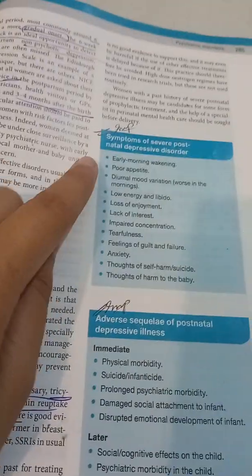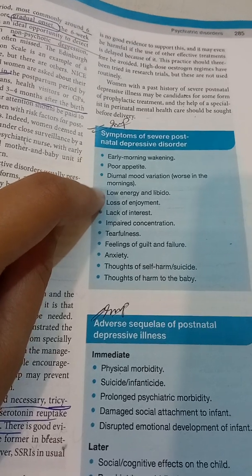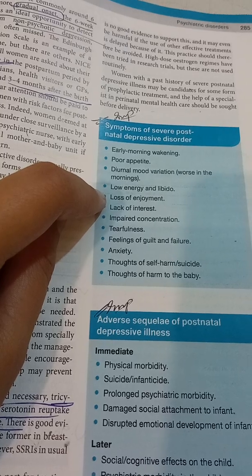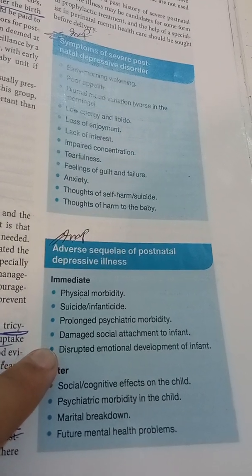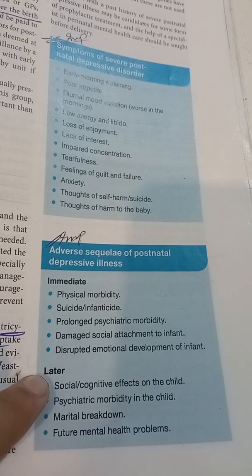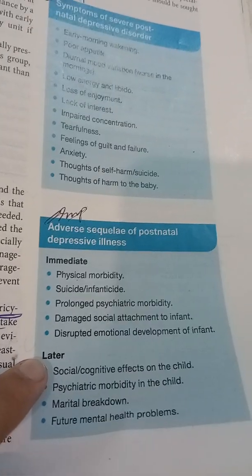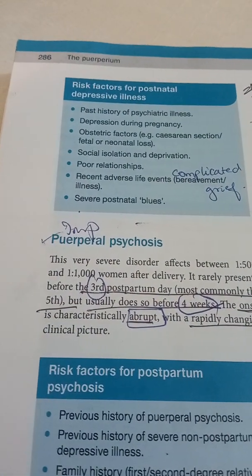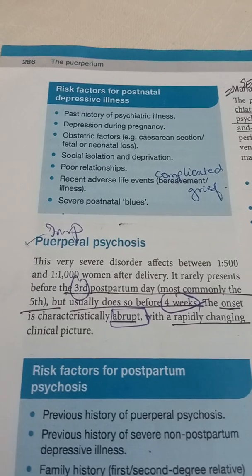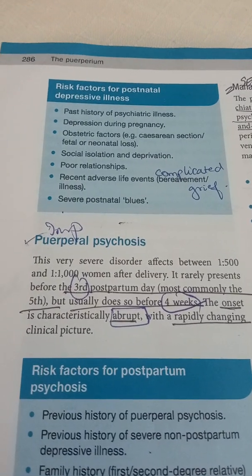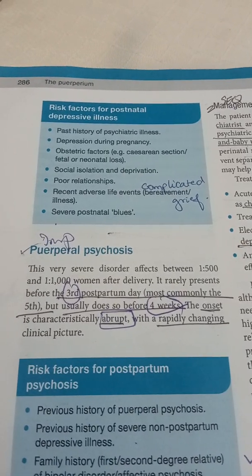Symptoms of severe postnatal depressive disorder include early morning awakening, poor appetite, diurnal mood variation, low energy and libido, loss of enjoyment, tearfulness, guilt, anxiety, impaired concentration, thoughts of self-harm, and thoughts to harm the baby. Risk factors include past history of depression, depression during pregnancy, obstetric factors like cesarean section, fetal and neonatal loss, social isolation, poor relationships, and recent adverse life events.